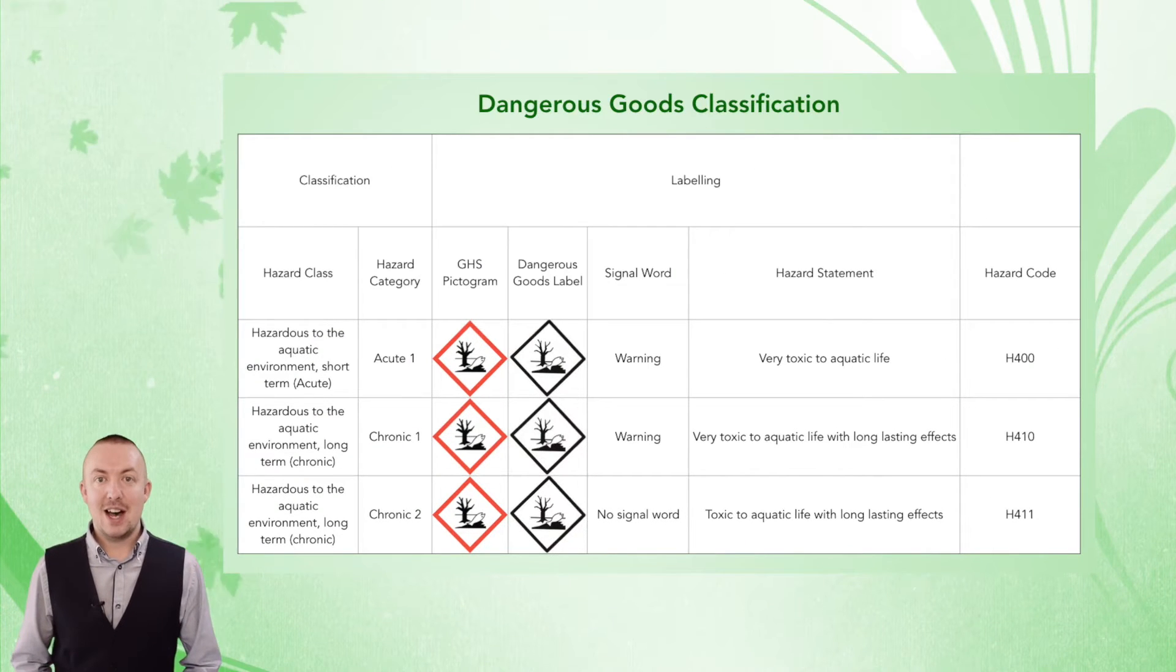It's worth pointing out that wastes which are acute category one and chronic categories one and two will also be dangerous goods if those wastes contain components above the thresholds in the dangerous goods regulations.